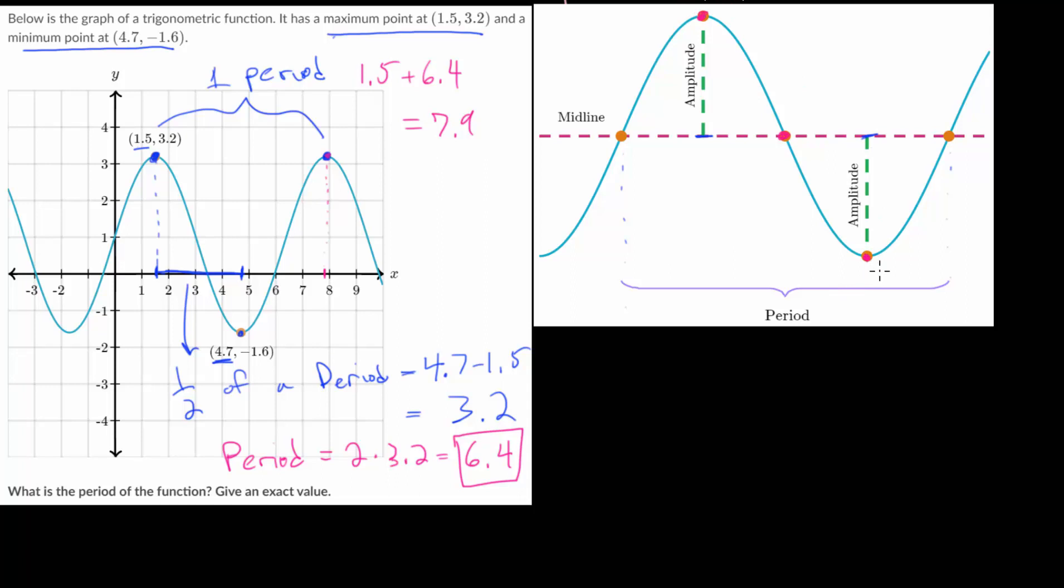And since the distance to the minimum value from the maximum is half of a period, and this point's right in the middle of that, this distance right here would be one-fourth of a period. And we can use symmetry like this to answer further problems involving the period.